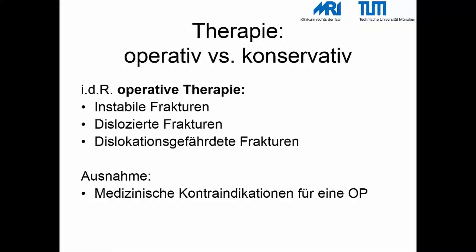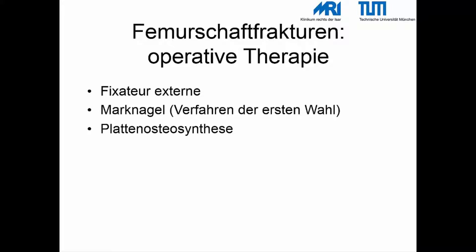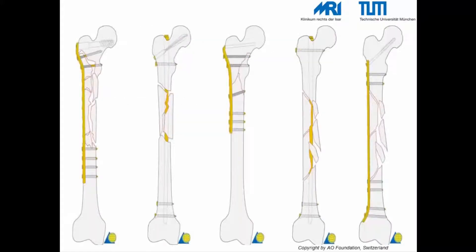Die Therapie ist in der Regel operativ, da Femurfrakturen meist instabil, disloziert oder zumindest dislokationsgefährdet sind. Ausnahmen stellen ein inakzeptables perioperatives Risiko dar. An Implantaten stehen der Fixateur extern, der Marknagel oder die Plattenosteosynthese zur Verfügung. Auf den Grafiken sind beispielhaft verschiedene Versorgungen gezeigt: eine DCS-Schraube, ein Femurnagel, eine Kondylenplatte, ein ungebohrter Femurnagel sowie eine winkelstabile Plattenosteosynthese.